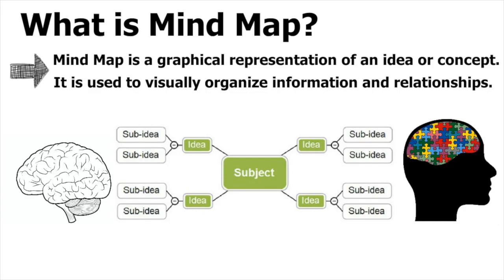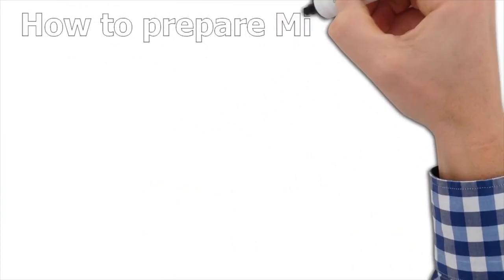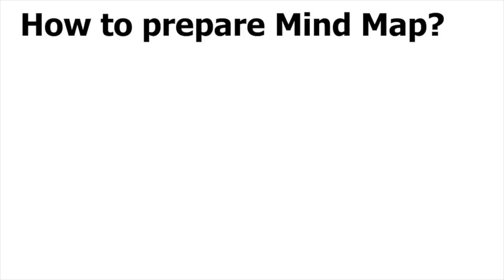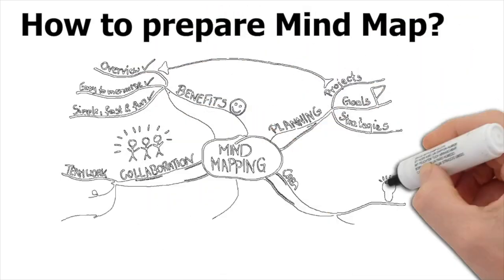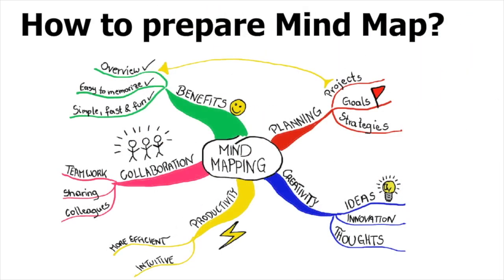Let's move on to the next slide and see with an example how to prepare a mind map. A mind map can be prepared with three things: first, the idea which is in your mind; second, a few colors; and third, join those ideas in a graphical representation that shows the different kinds of relationships between ideas.